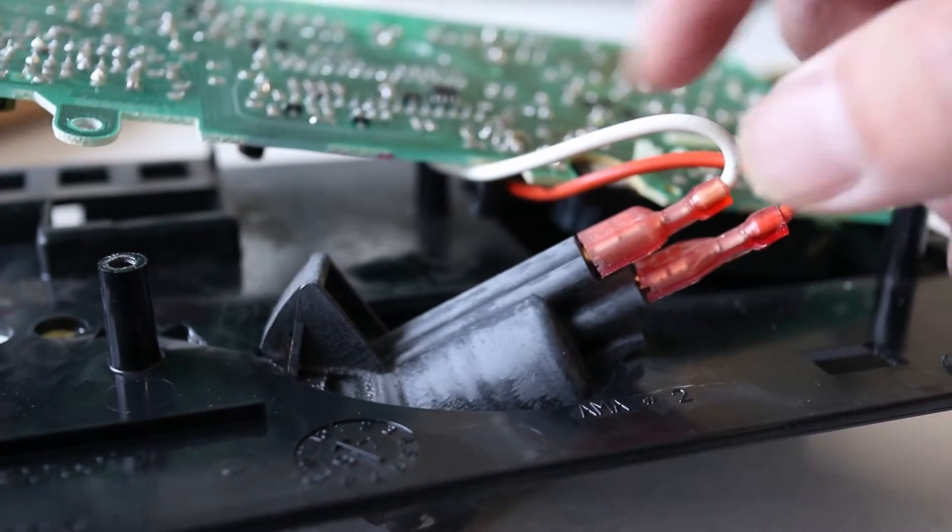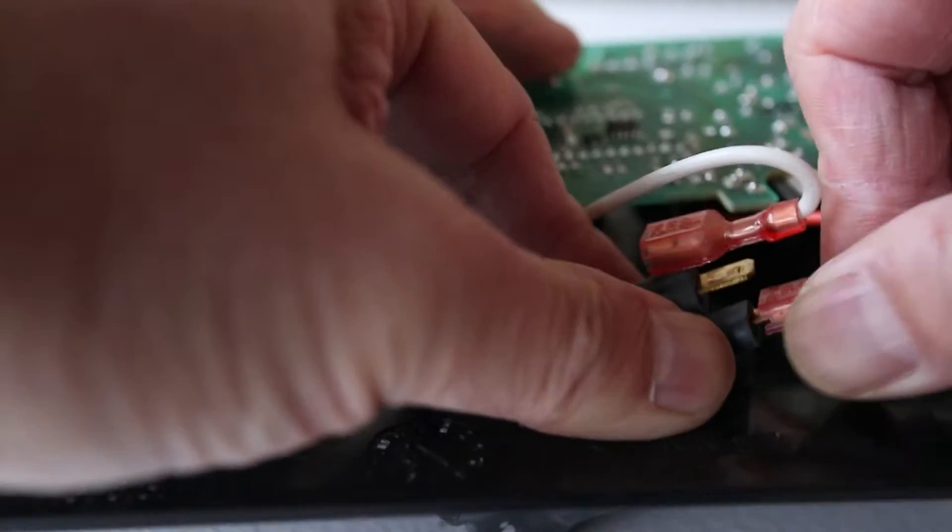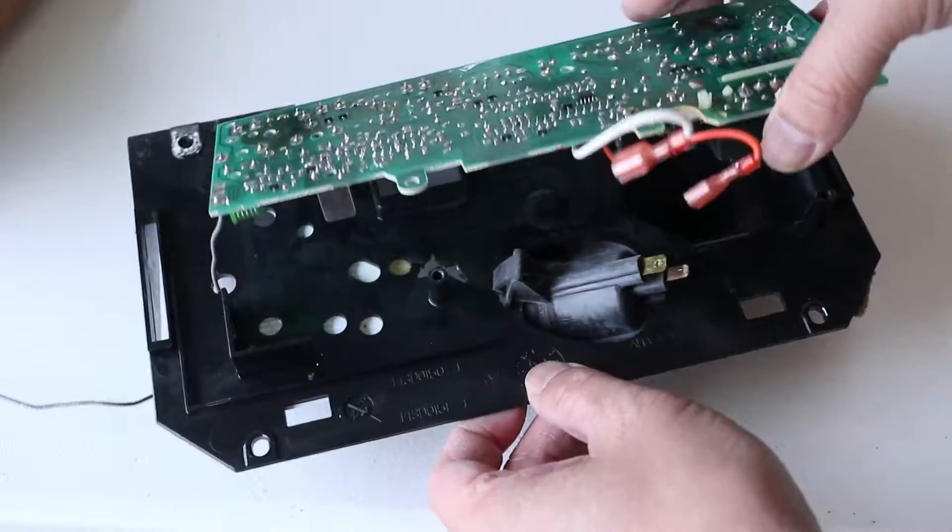Then take note of the wire colors and then unplug the spade connectors on the light socket. Doing this completely detaches the board from the faceplate.